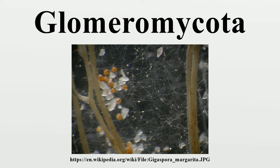Reproduction. The Glomeromycota have generally coenocytic mycelia and reproduce asexually through blastic development of the hyphal tip to produce spores with diameters of 80 to 500 micrometers. In some, complex spores form within a terminal saccule. Recently it was shown that Glomus species contain 51 genes encoding all the tools necessary for meiosis. Based on these and related findings, it was suggested that Glomus species may have a cryptic sexual cycle.